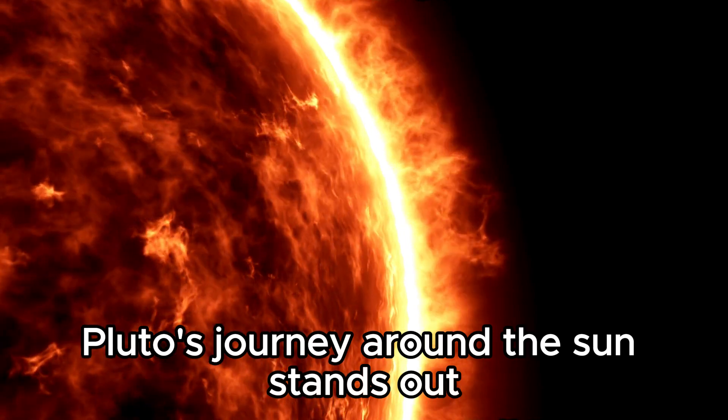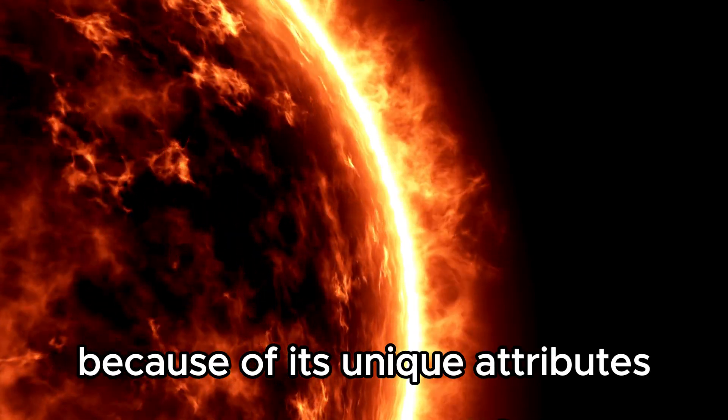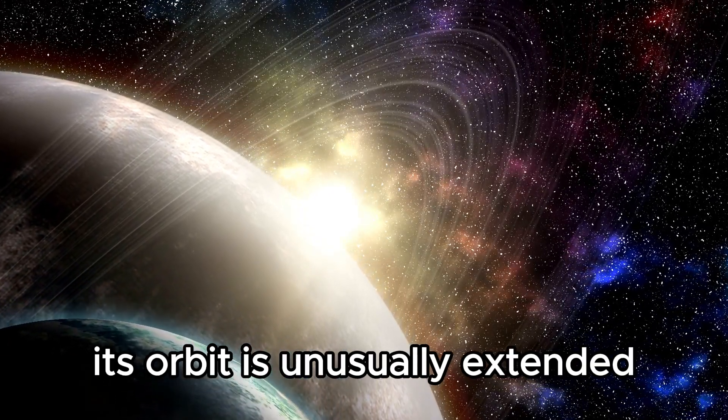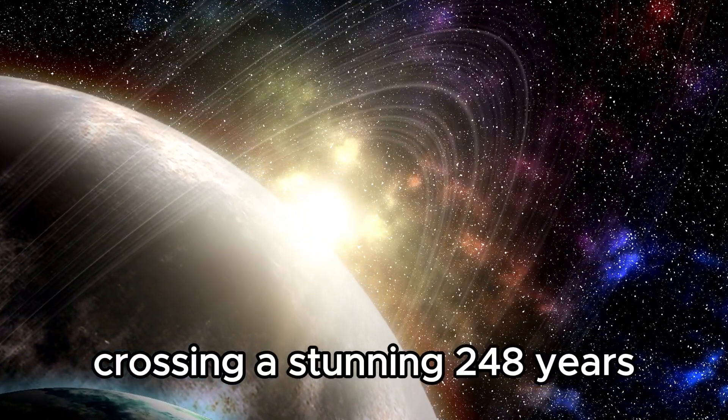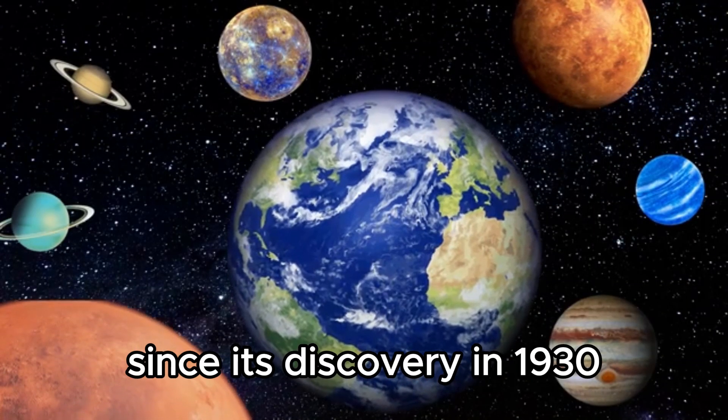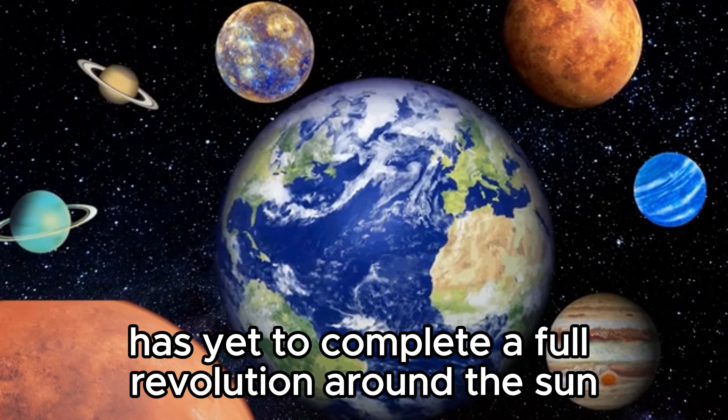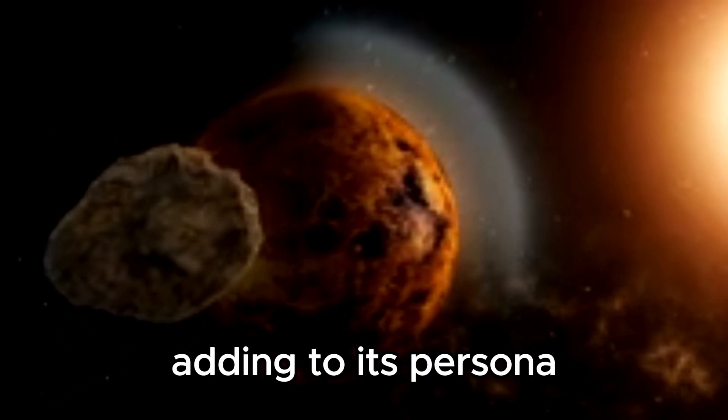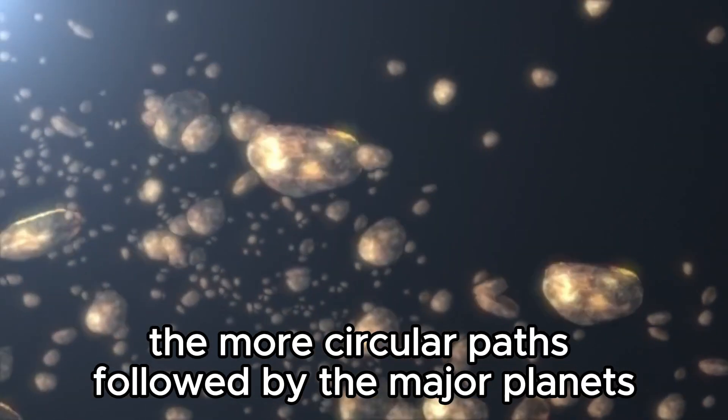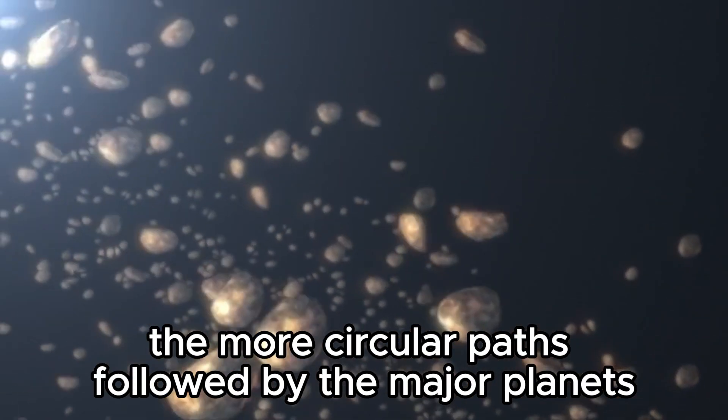Pluto's journey around the Sun stands out because of its unique attributes within our solar system. Its orbit is unusually extended, taking a stunning 248 years. Since its discovery in 1930, Pluto has yet to complete a full revolution around the Sun. Adding to its mystique is the highly stretched state of its orbit, a departure from the more circular paths followed by the major planets.